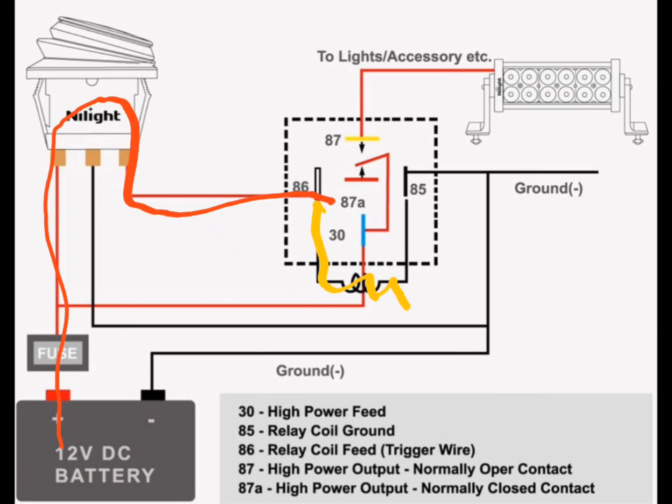Electricity will flow through our coil here and it will come out of pin 85 and head right back to the ground of the battery. So when you flip the switch, it energizes this electromagnet.